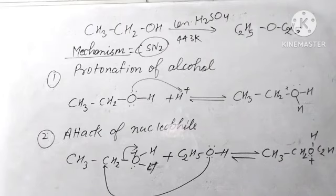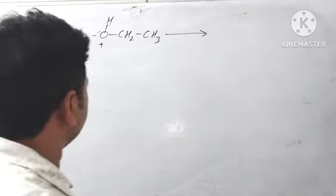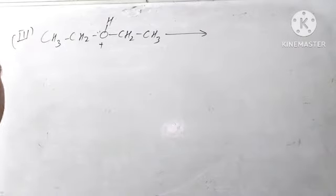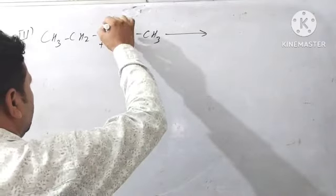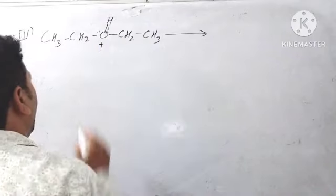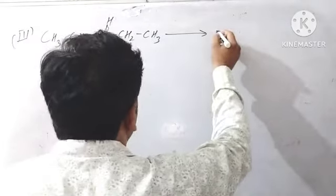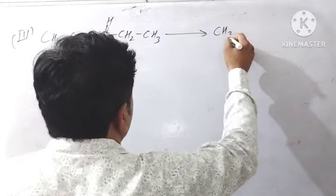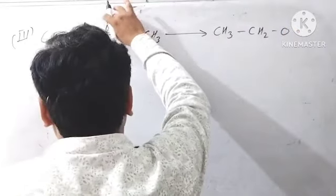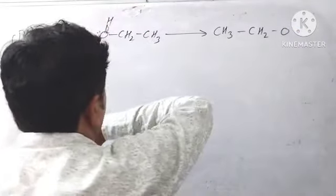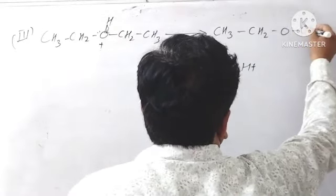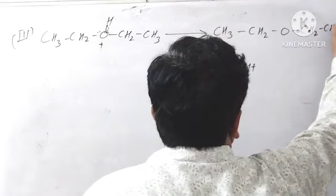So in this last step, we will see it loses proton. It loses proton means being positive charge, it attracts this electron. So it is forming here CH3-CH2-O-CH2-CH3. It has attracted the electron, so it will lose the positive charge as H+. This is it.